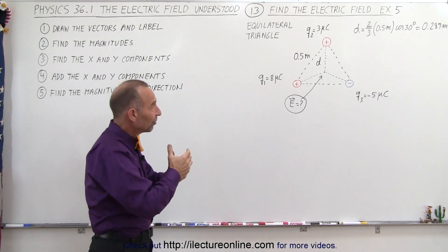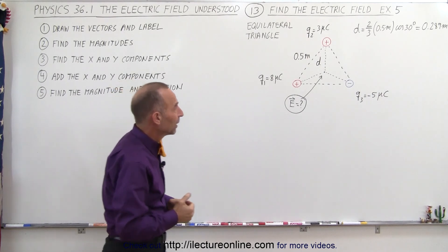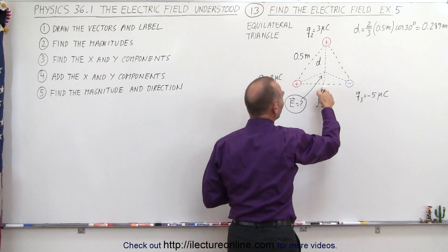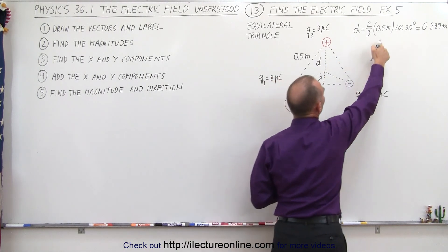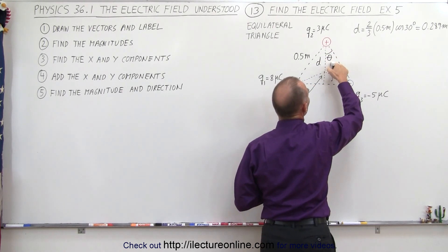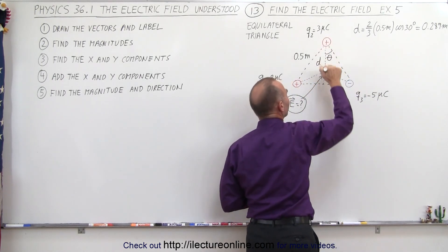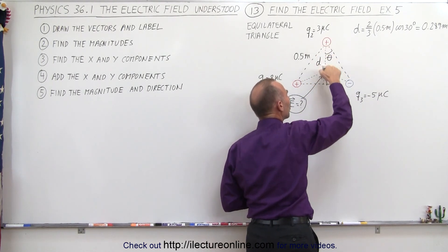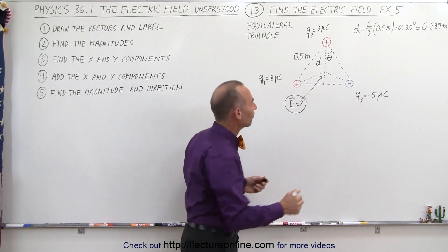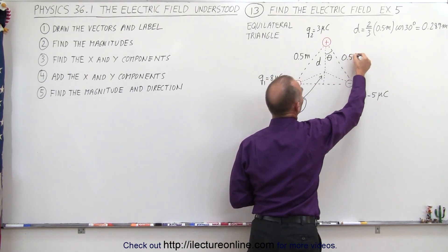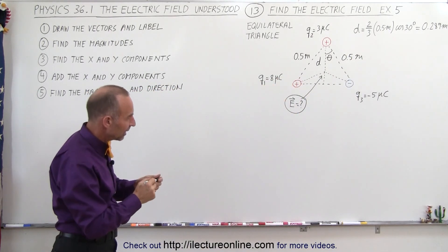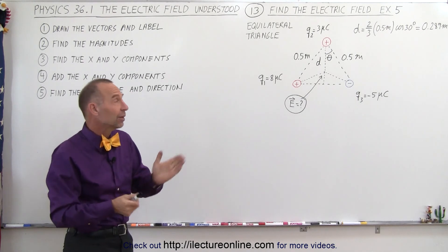How do we do that? First, let's find the distance to that midpoint. If we draw a line all the way through to the bottom, we can see that the vertical distance will equal the hypotenuse — which is 0.5 meters — times the cosine of 30 degrees. Since we're trying to find the electric field at the point 2/3 of the way down, we multiply by 2/3. So D = (2/3) × 0.5 × cos(30°), because each interior angle of an equilateral triangle is 60 degrees, making theta 30 degrees.